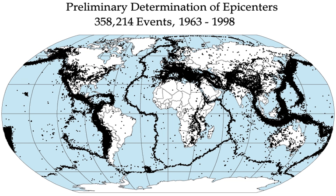Tectonic earthquakes occur anywhere in the earth where there is sufficient stored elastic strain energy to drive fracture propagation along a fault plane. The sides of a fault move past each other smoothly and aseismically only if there are no irregularities or asperities along the fault surface that increase the frictional resistance. Most fault surfaces do have such asperities, leading to a form of stick-slip behavior. Once the fault has locked, continued relative motion between the plates leads to increasing stress and stored strain energy in the volume around the fault surface.